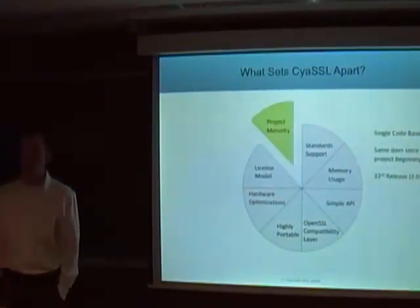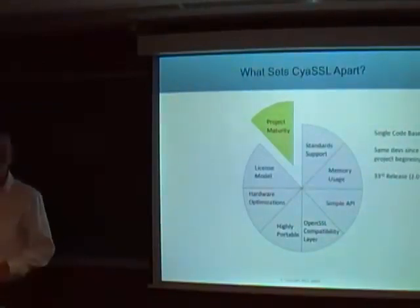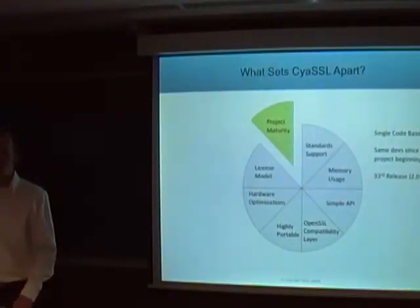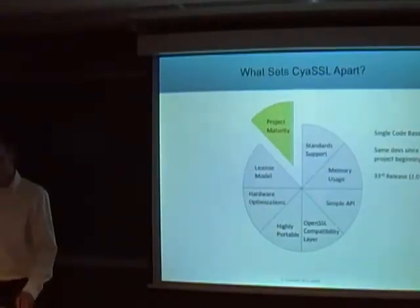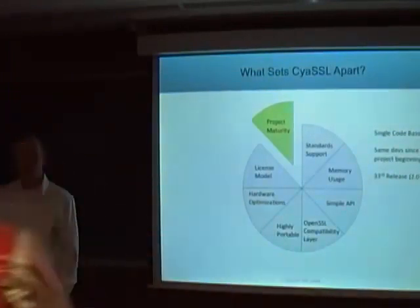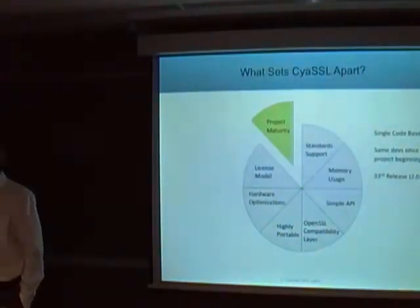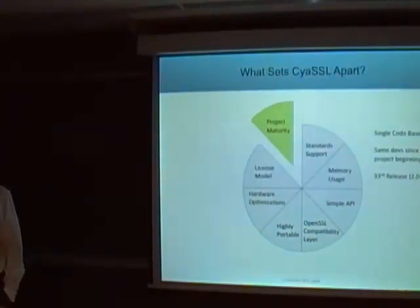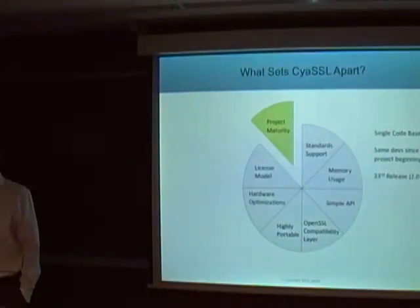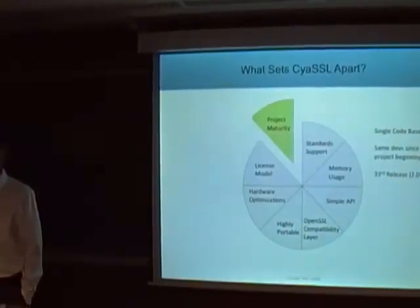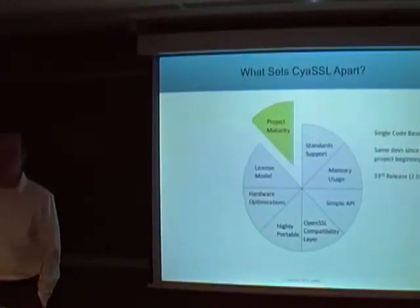The last point is the project's maturity. Many open source projects change hands throughout their lifetime, but we're proud to say that CYASL still has the same developers on board that it did when we started in 2004. The vision has been consistent all the way from the beginning. We're on our 33rd release, version 2.0.6, and it's been tested in the open source community for the last seven years. Millions of people have used it, in everything from home automation to games to routers, cloud services, and lots of embedded devices.